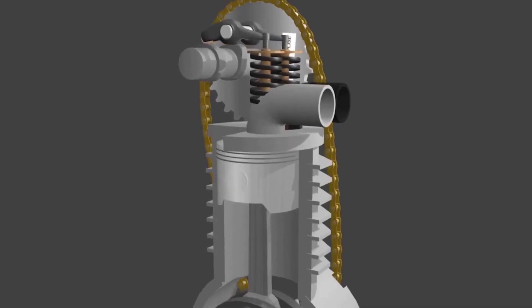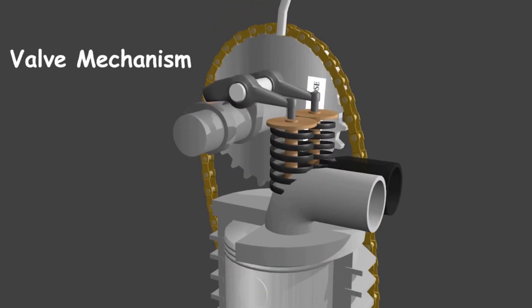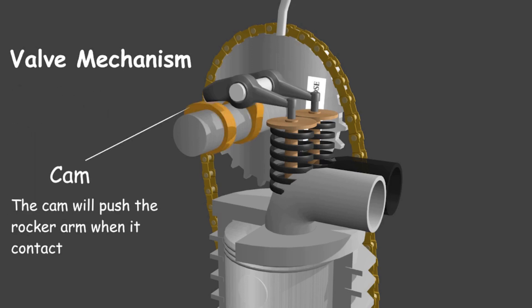Above the cylinder, there is a valve mechanism. This mechanism has a function to regulate intake and exhaust valve opening based on the crank rotation. So the faster the engine RPM, the faster valves open. It makes the valve opening always accurate.